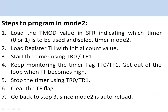The steps to program in mode 2 are similar. Load the TMOD register, then load TH with the initial count value based on the required time delay. Start the timer and monitor the overflow flag. When it goes high, exit the loop, stop the timer, and clear the flag. In mode 2, you can go directly back to step 3 to restart the timer without reloading the register, because this is auto-reload mode.